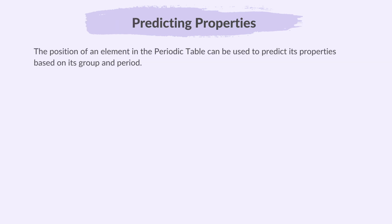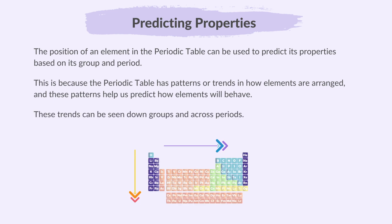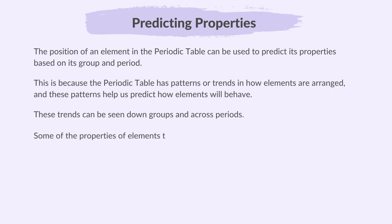The position of an element in the periodic table can be used to predict its properties based on its group and period. This is because the periodic table has patterns or trends in how elements are arranged and these patterns help us predict how elements will behave. These trends can be seen down groups and across periods. Some of the properties of elements that we can predict using the periodic table are boiling point, melting point, density and reactivity.